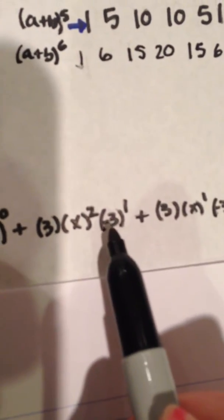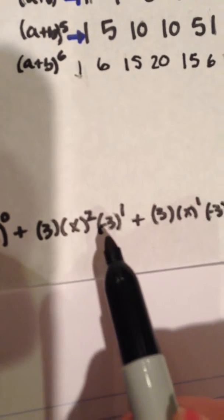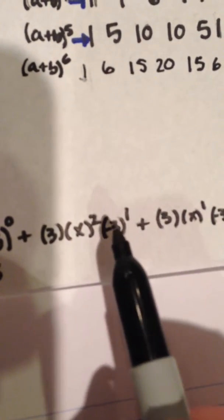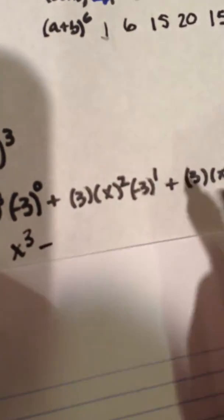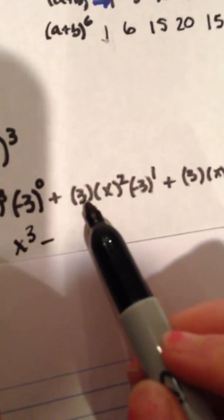This is our next term. We know that it's going to be negative because the second term is negative and raised to an odd power. So we can put a negative sign right there.